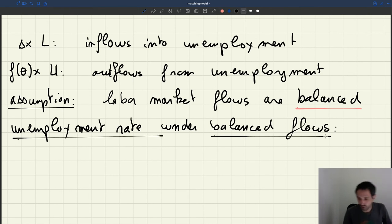You'll see that this will allow us to express the unemployment rate as a function of stuff we know. So we've just said, we start from the assumption that there are balanced flows.